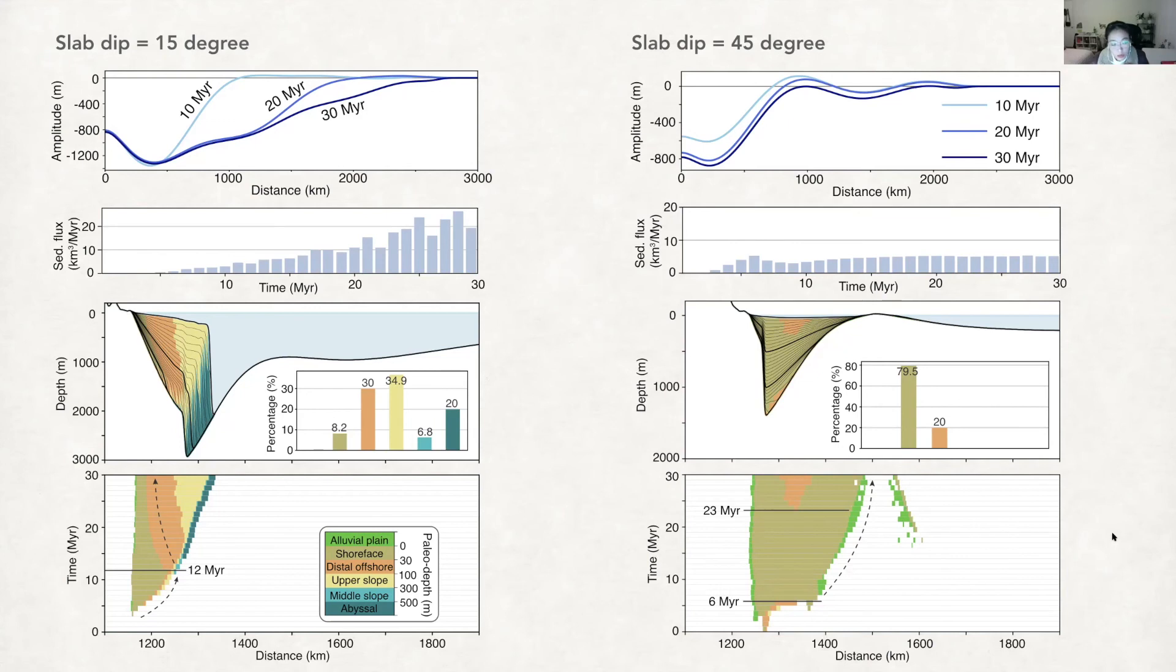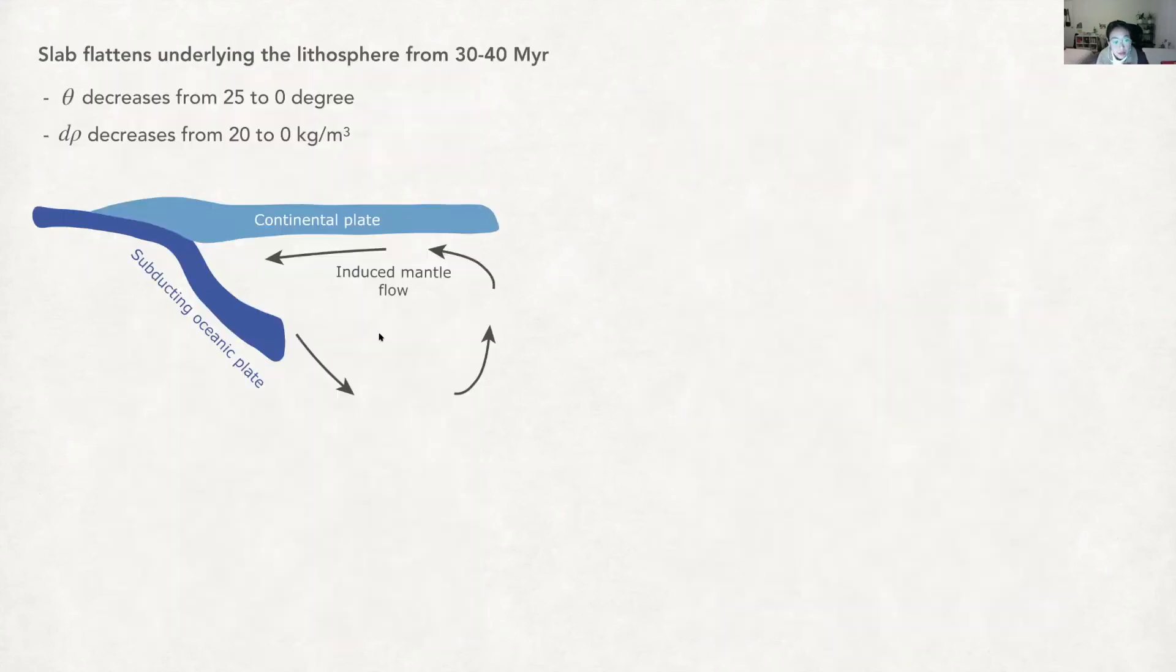A more interesting scenario is that the subducting slab changes dip angle during the subduction. For example, shown here, like the Farallon slab during the Cretaceous or the Nazca Plate during Miocene.